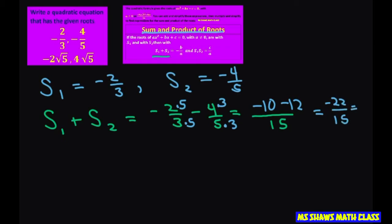This gives you negative 22 divided by 15, which equals negative 22 divided by 15 equals negative b divided by a.